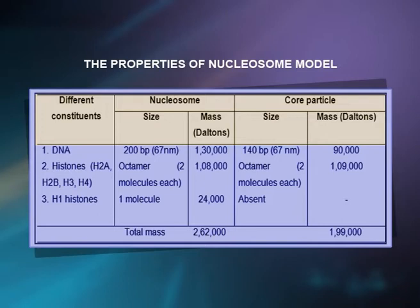The core particle also consists of an octamer of 2 molecules each with a mass of 19,000 Daltons. The third constituent is H1 histone, with a size of 1 molecule and a mass of 24,000 Daltons. H1 is absent in the core particle.